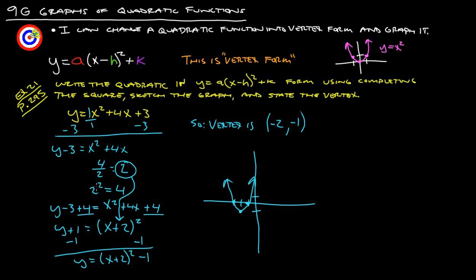So that's really all there is to this, so you should, after this now, be able to say that I can change a quadratic function, which is this here, into vertex form, which is what we have here, and then we're able to graph it. If you have any questions, please feel free to ask. Thanks.